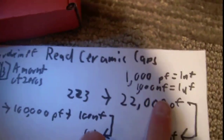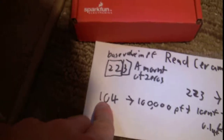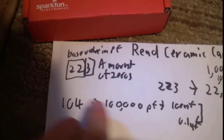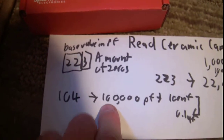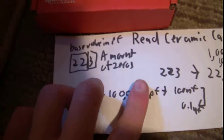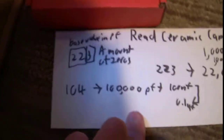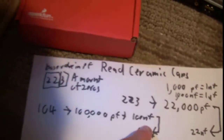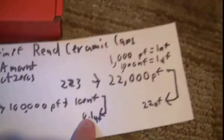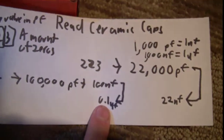And 1,000 nanofarads equals 1 microfarad. Same thing with a 104 cap: you get 104, lop off the 4, add that many zeros — that gives you 10 with 4 zeros, which is 100,000 picofarads. That converts to 100 nanofarads when you divide by 1,000, and then to 0.1 microfarads.